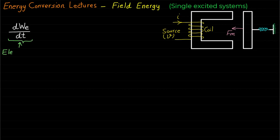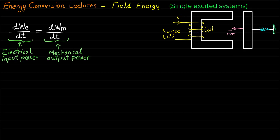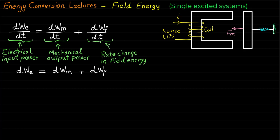The input electrical power will be equal to mechanical power plus the rate of change in field energy. This equation of power flow can be expressed in differential form. Basically, this equation represents the energy flow or energy balance, and the mathematical approach that uses this equation can also be called the energy flow approach, which we will be using throughout our lecture on electromechanical energy conversion.